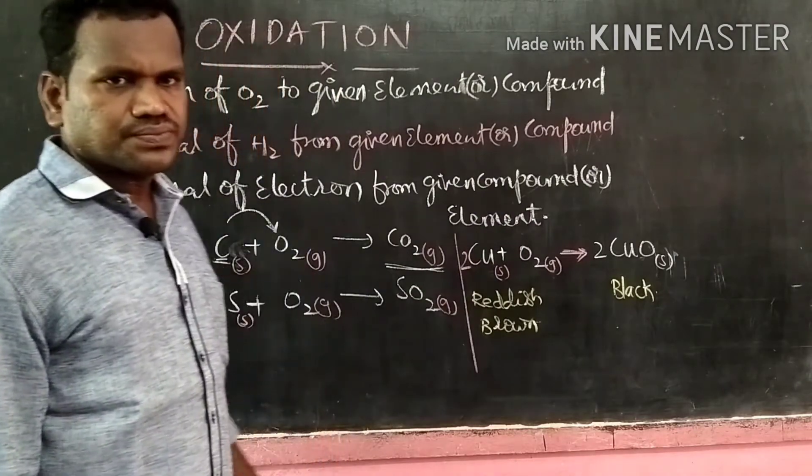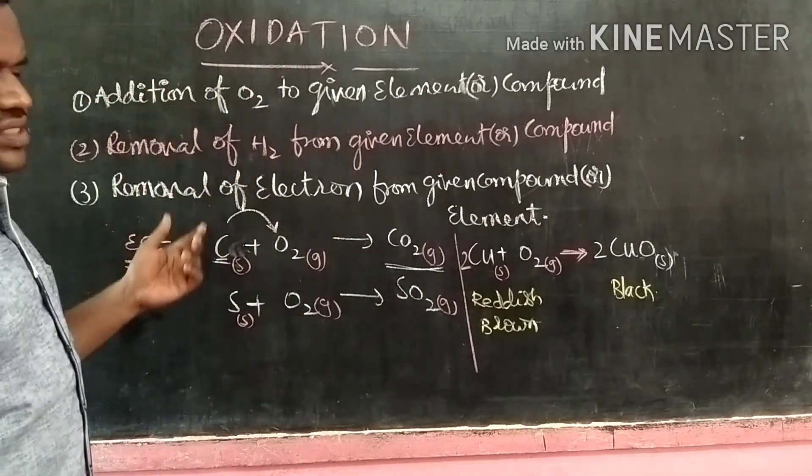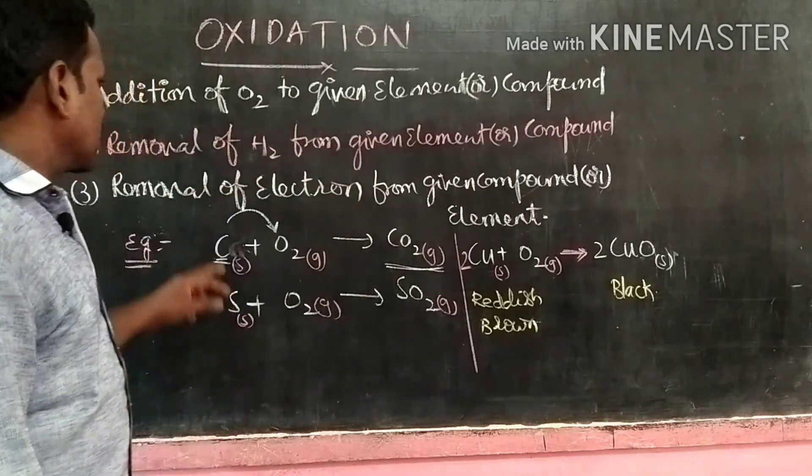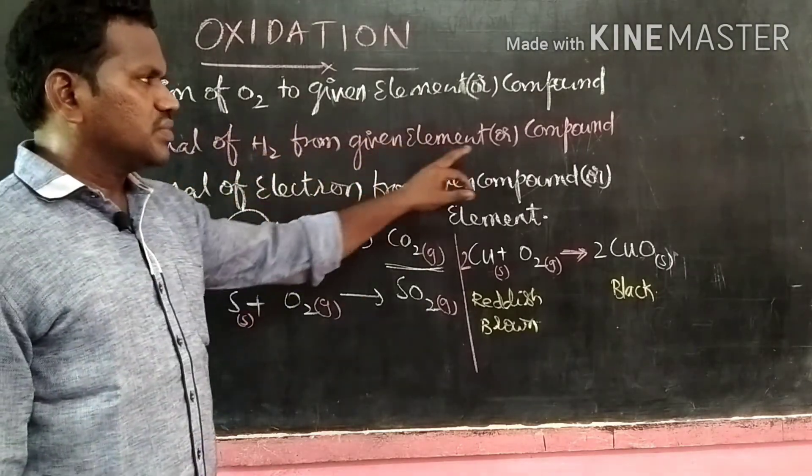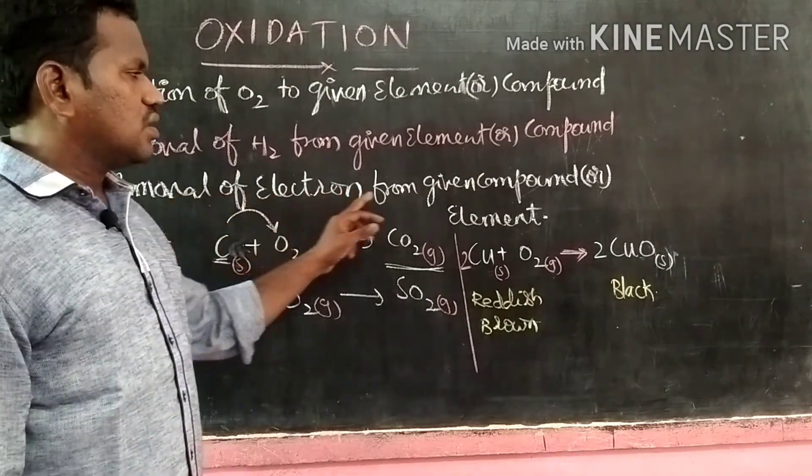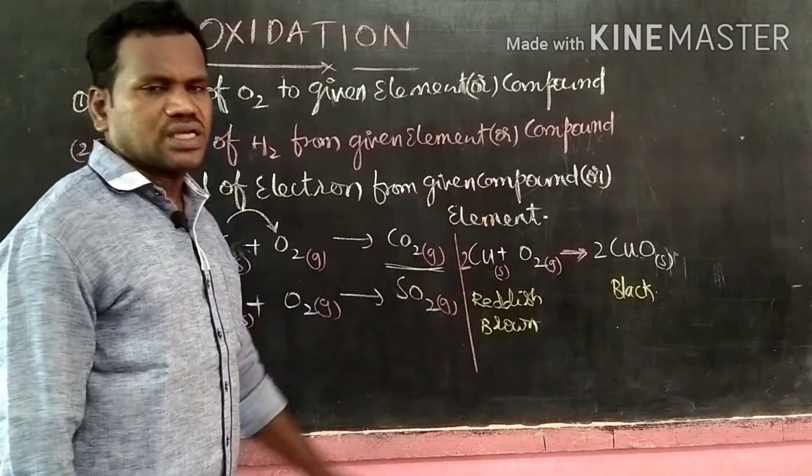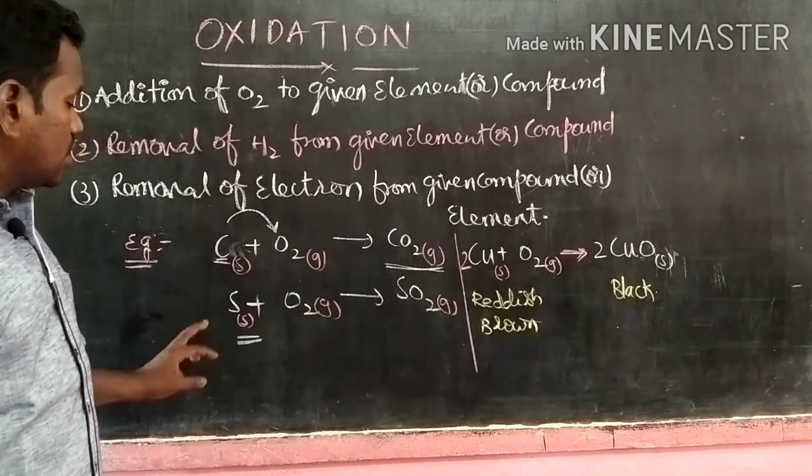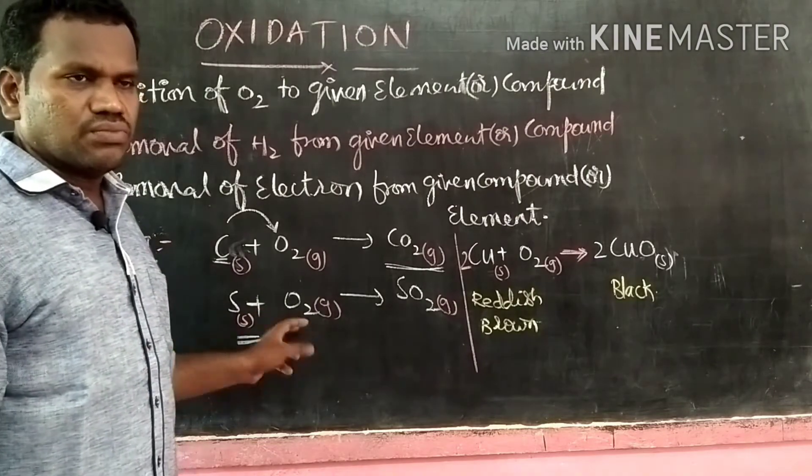The total three definitions are: addition of oxygen to the given element, removal of hydrogen from the given element or compound, removal of electron from the given compound or element. Let us come to one more example. Sulfur reacts with oxygen.